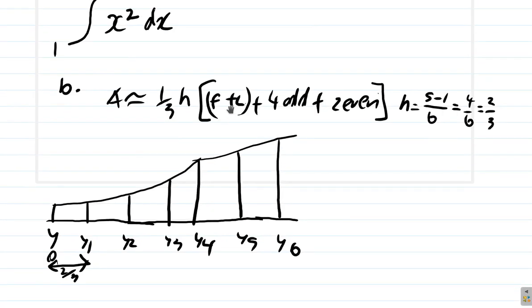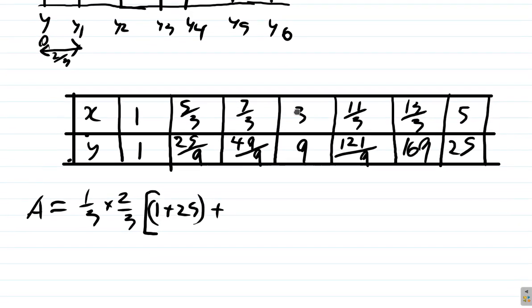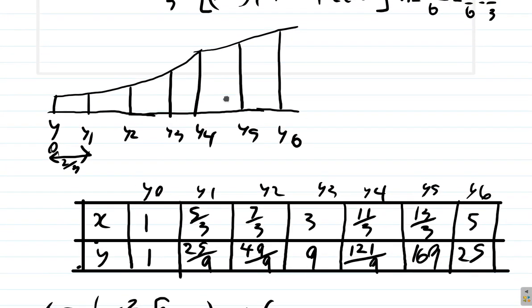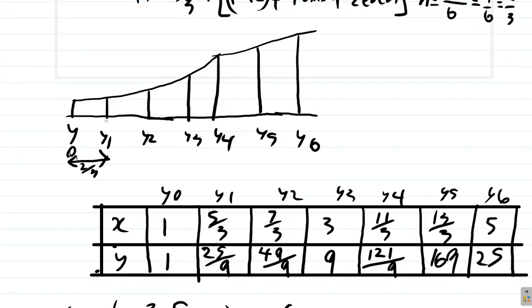Plus 4 times the odd ordinates. Now, let's see which are even and which are odd. This is y0, y1, y2, y3, y4, y5, y6. Remember, on the graph, these are the values. Y0 will go up to as high as 1. Y1, the height of it is 25 over 9. Y2 is 49 over 9. This height.